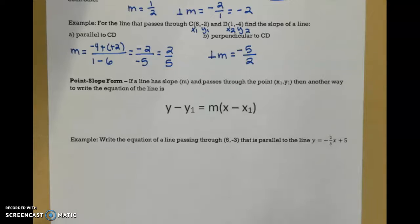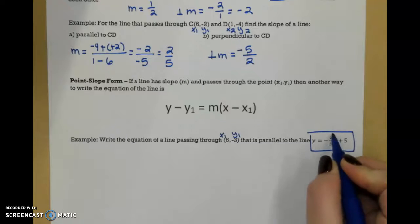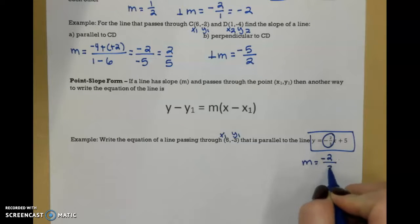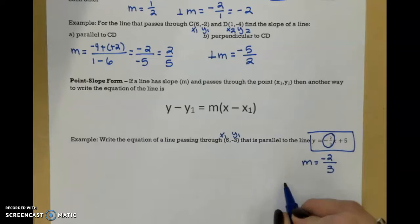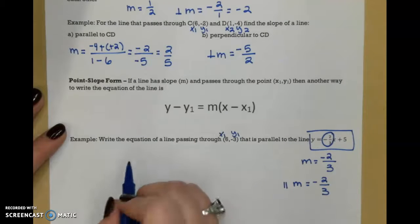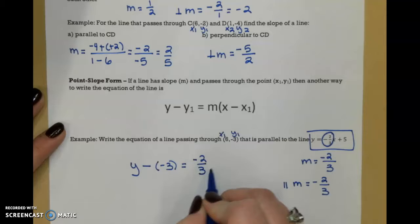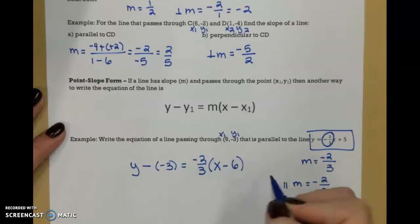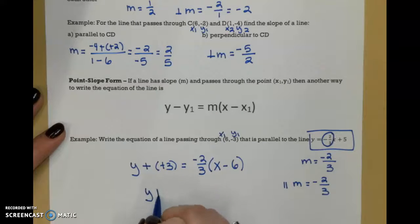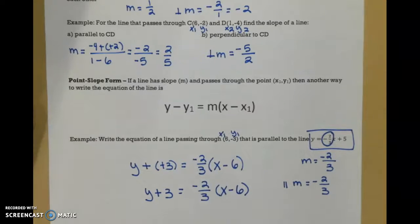We want to write an equation that passes through 6, negative 3 — so that's going to be my x1, y1 — and is parallel to the given line. This is in slope-intercept form, so to find my slope I need to look at what's in front of the x. My slope is negative 2 over 3. Because I'm looking for a parallel line, my parallel slope is also negative 2 over 3. So I plug in what I know into point-slope form: y minus negative 3 equals negative 2 over 3 times x minus 6. I need to change that to plus plus, so this becomes y plus 3 equals negative 2 over 3 times x minus 6.